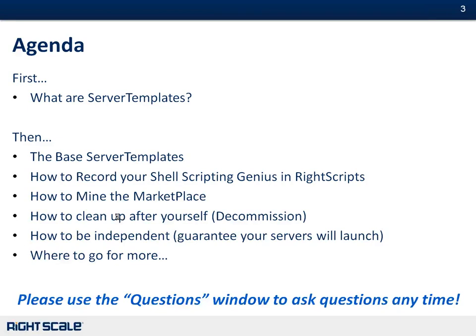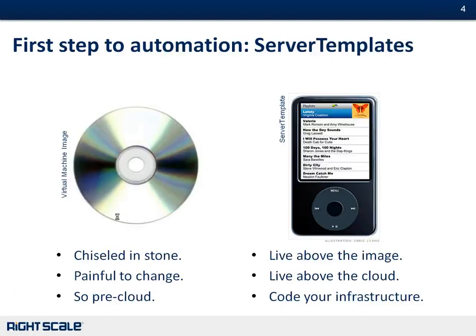The first step to automation in RightScale is what we call server templates. This is technology that we've developed, and it is one piece of the puzzle. There are other ways in RightScale to automate your infrastructure, but it is probably the most important piece of the puzzle.